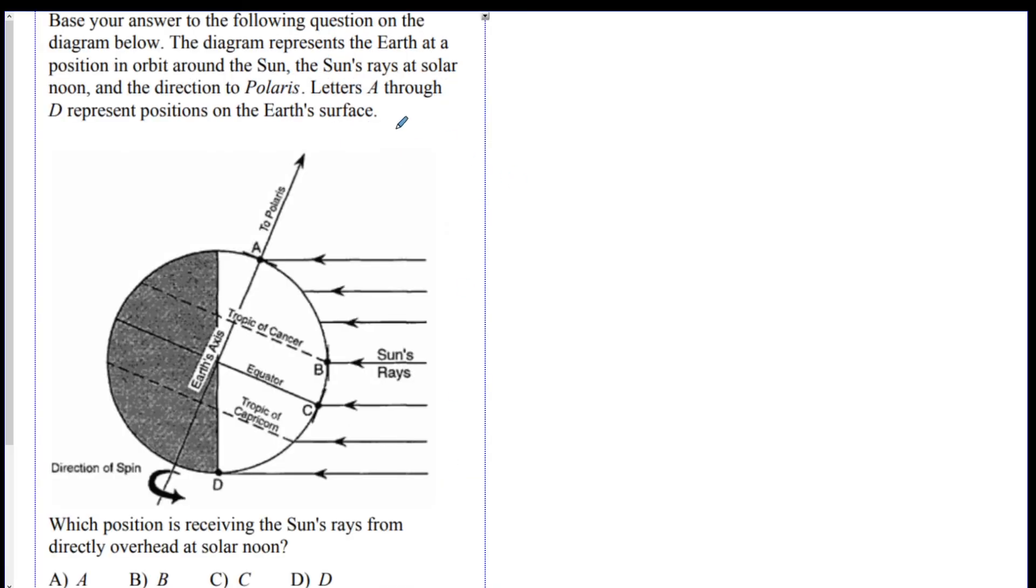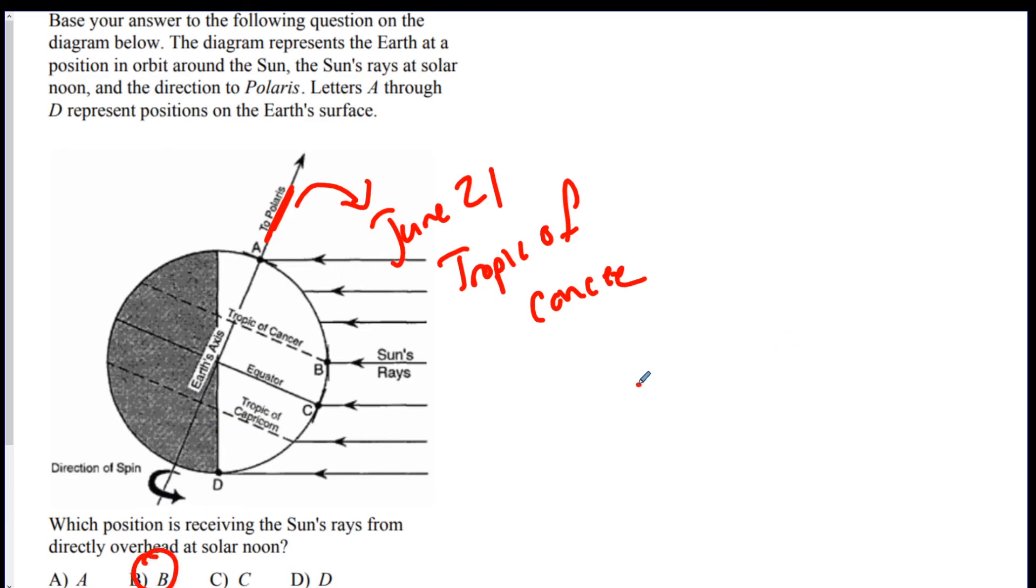The next question here says, base your answer to the following question on the diagram. It represents the Earth in a position around the sun, the sun's rays at solar noon in the direction to Polaris. Letters A through D represent different positions. Which position is receiving the sun's rays from directly overhead at solar noon? Hopefully you paused it and you thought about it. Now you would first try to figure out where is this tilted? This is the whole Earth. The axis here is tilted towards the sun's rays this way. So that means this is probably June 21st. On June 21st, the direct rays hit the Tropic of Cancer. So that would be location B. If you were to see it like this, if the sun rays were over here and you saw the Earth like this, it was tilted that way, you would pick the Tropic of Capricorn because this would be December because we're tilted away from the sun in December.